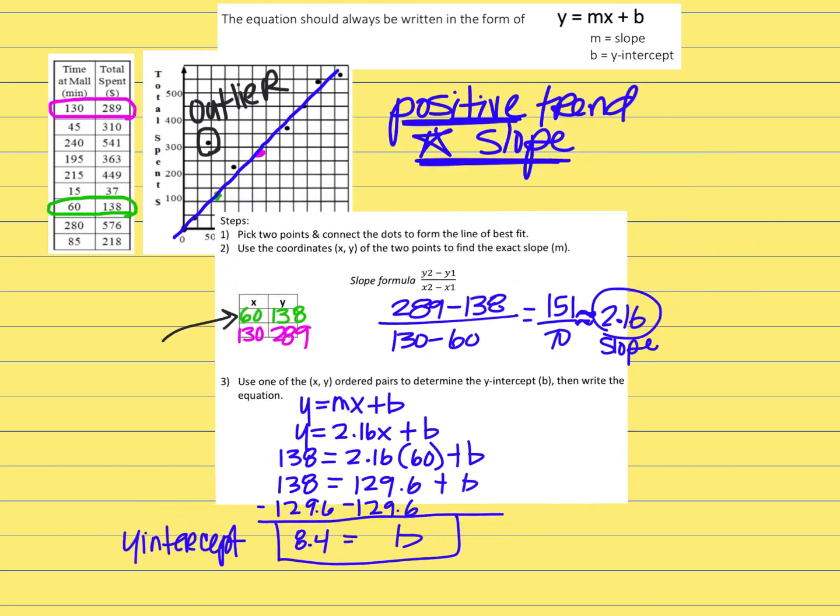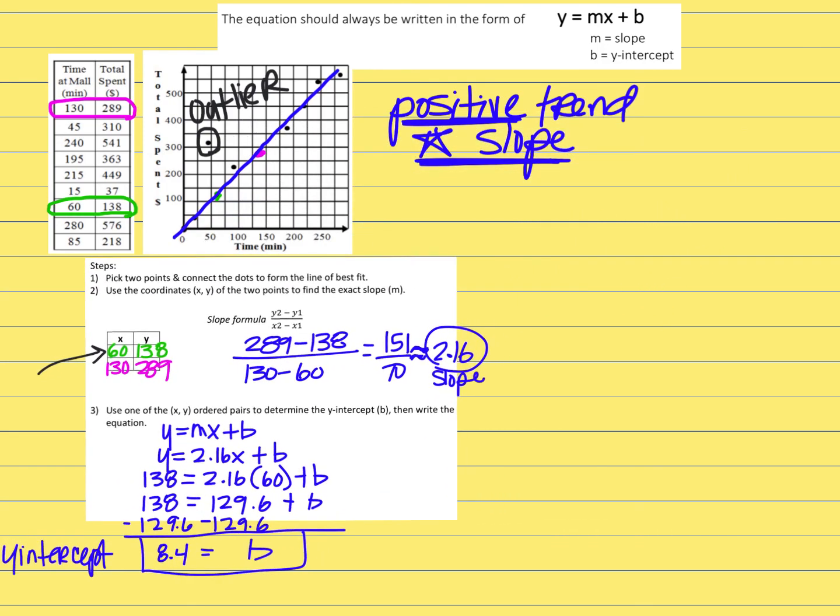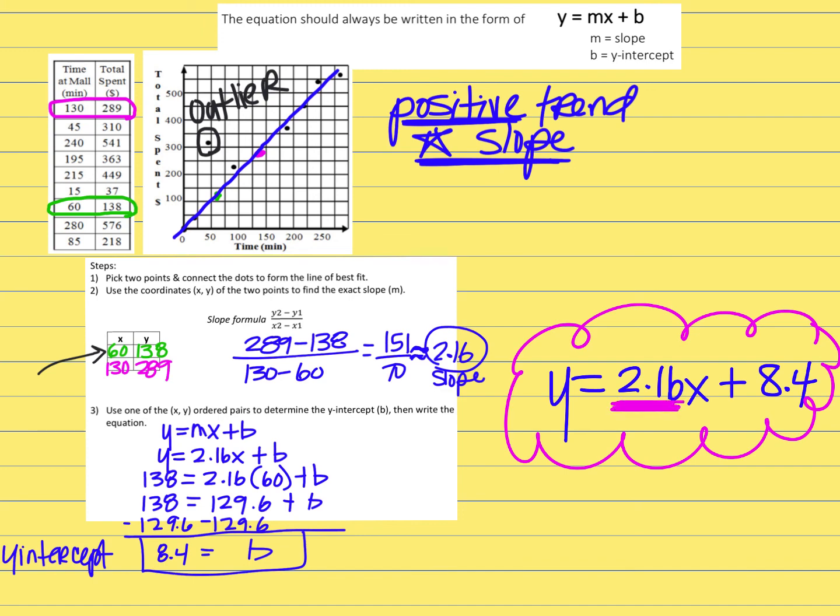I'm going to put those pieces of information together now to get the whole entire equation. y equals 2.16x plus 8.4 because we just determined that that was our y-intercept. So I would be looking for something close to 2.16 for my slope, positive, and something close to 8.4 if this was multiple choice.